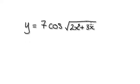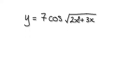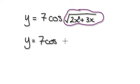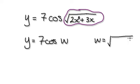But in this case here, look at this. You would look at this bit here and form a bubble. So in this case you would say y equals 7 cos — let's just call it w for the time being — where w equals 2x to the power of 5 plus 3x.